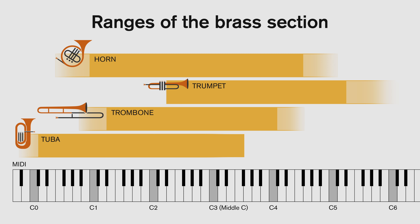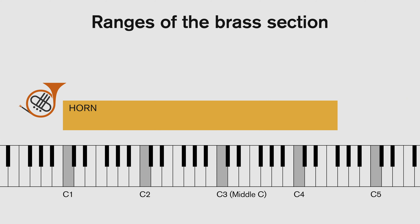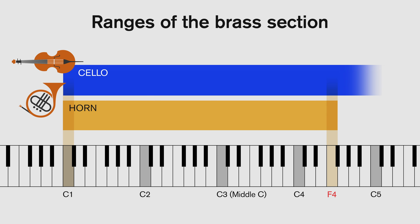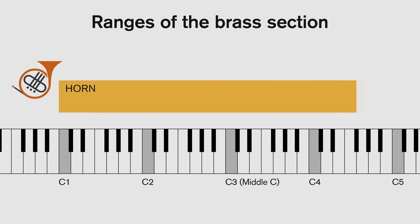Let's start with the horns, which you'll find on the top of a brass section in an orchestral score. In general, the range of a horn section starts from about a low C, the same as the cello, up to the top F over three octaves above that. The horn can technically play higher and also lower — from a sounding F below the cello C, up to a top C four octaves above.